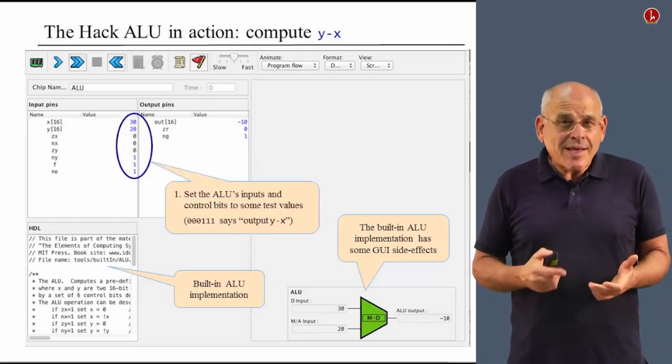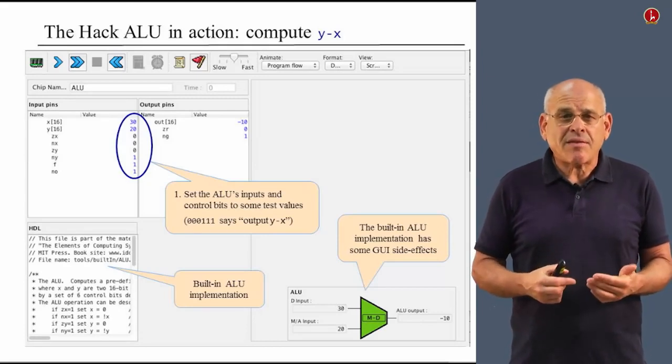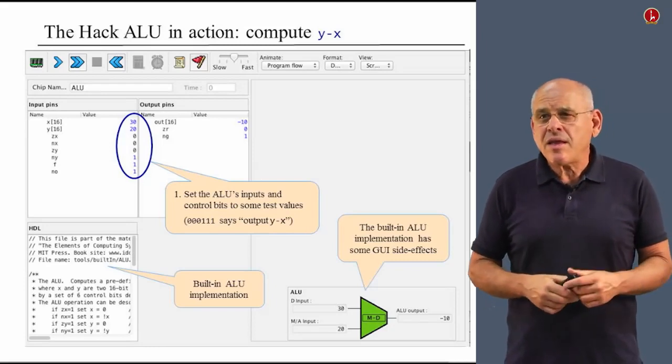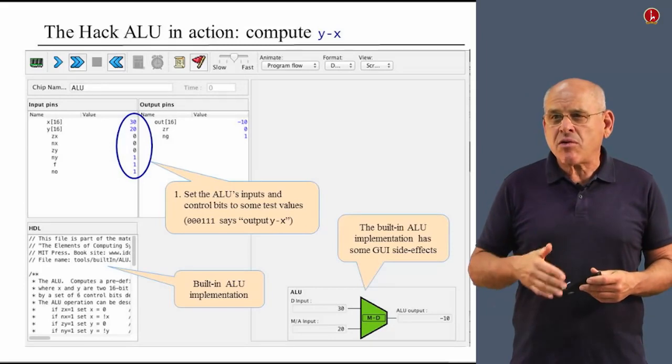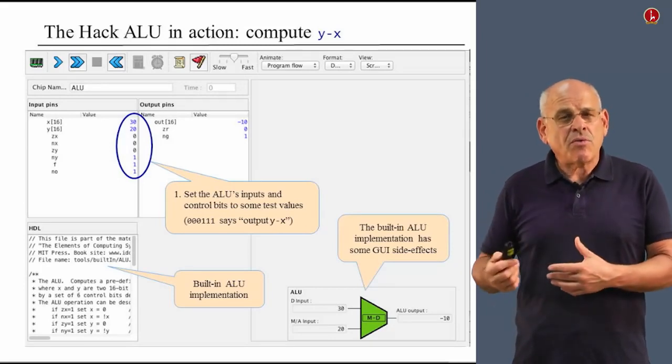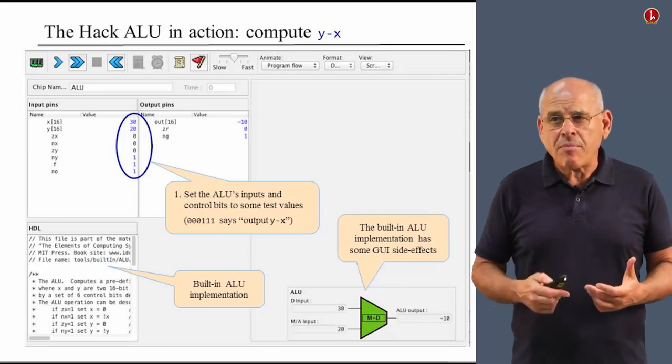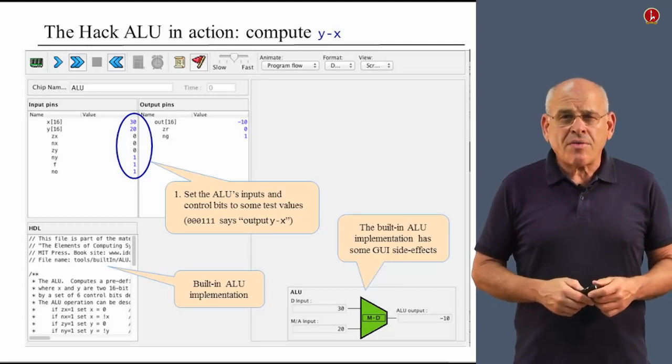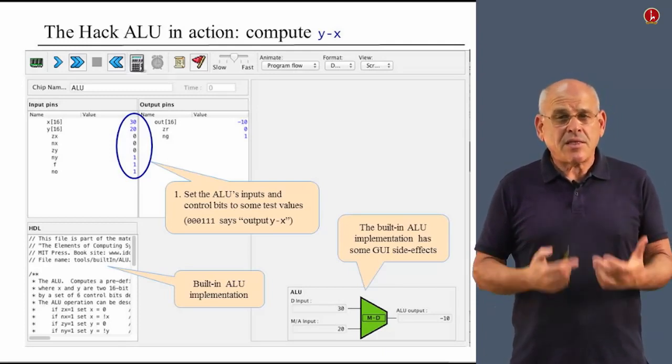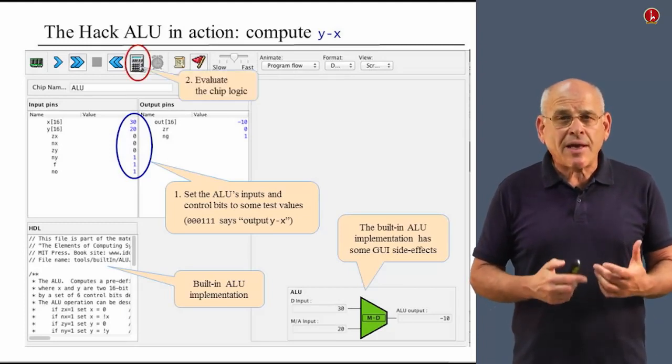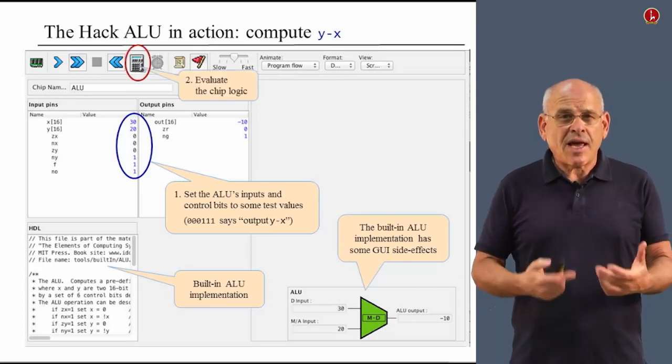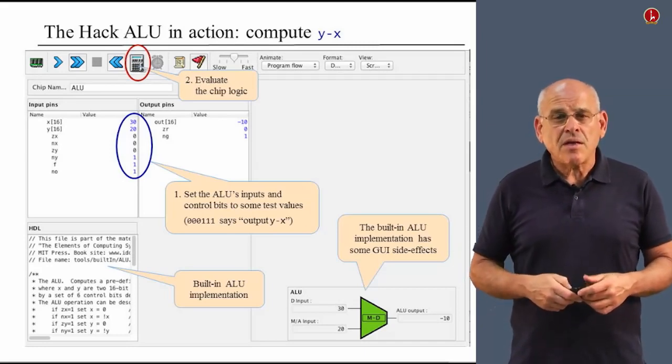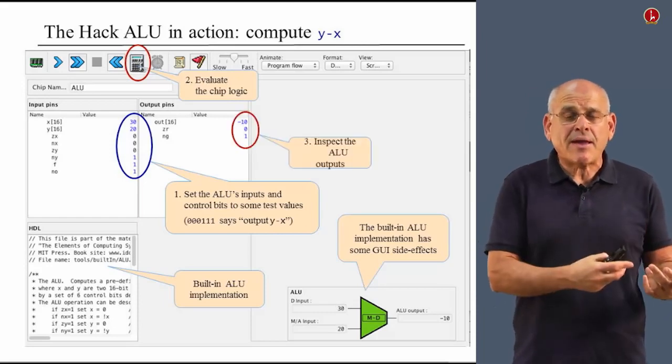This is a diagram that we made up to help you keep track of what happens inside the ALU. So moving along, we begin testing. As you can notice, we have set the ALU inputs to two values, which are 30 and 20. And we also set the control bits to 000111, which, if you look at the table that I showed you before, is a directive that tells the ALU compute y minus x. So the next thing that we do is we have to tell the simulator to actually do something. And we do it by clicking this calculator icon.